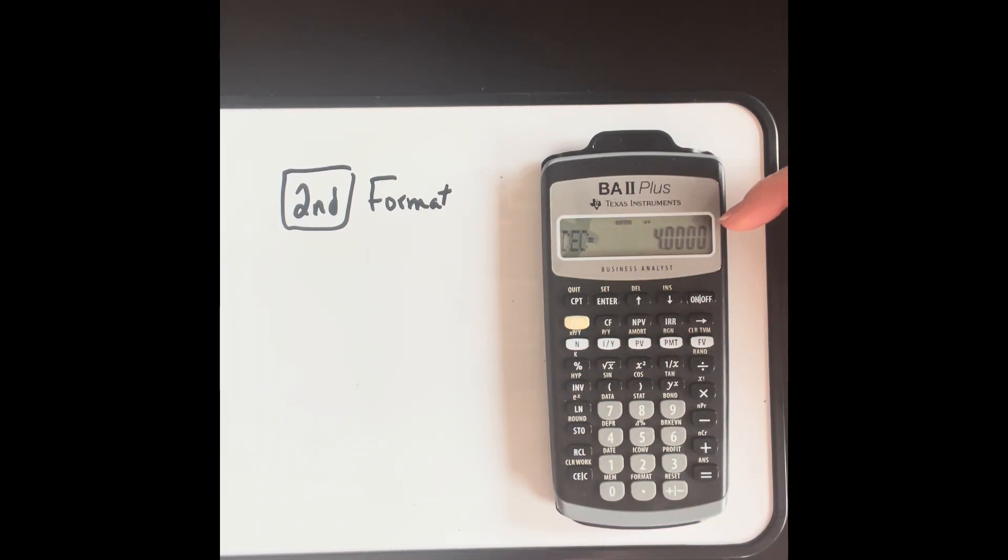Now it's always going to round my numbers off to four decimal places. I personally like a floating decimal point, so what I'm going to do is change it by entering a 9, and that changes it to a floating decimal point.